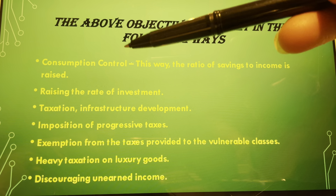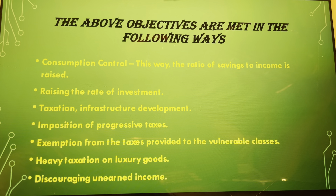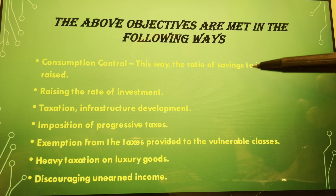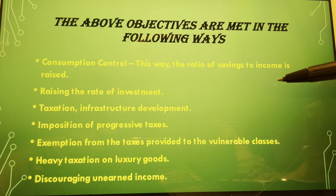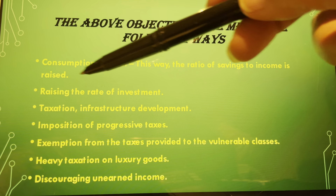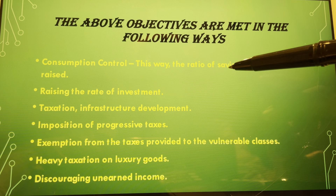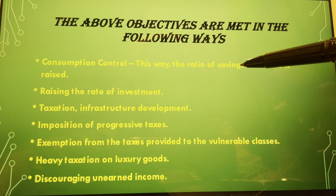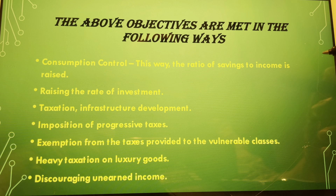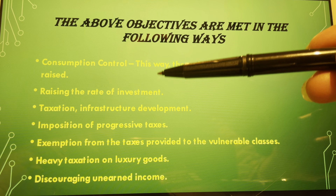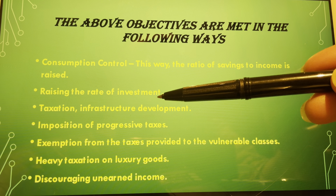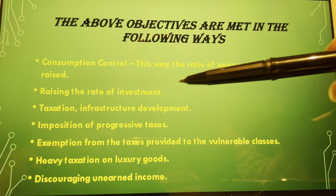If consumption decreases, the ratio of saving will be high, since income equals consumption plus saving (Y = C + S). When less money is spent on consumption, saving will be higher, and the ratio of saving to income will also rise. There is a direct relationship between saving and investment, so when saving is higher, investment will automatically be higher as well.